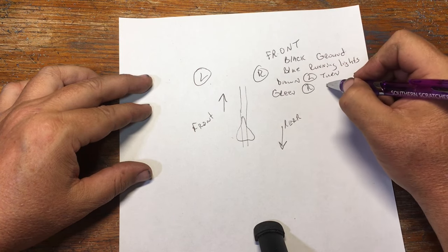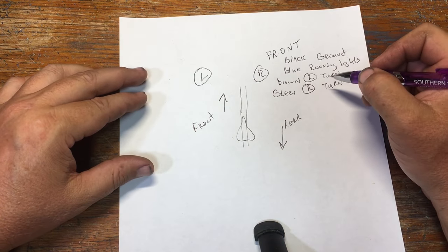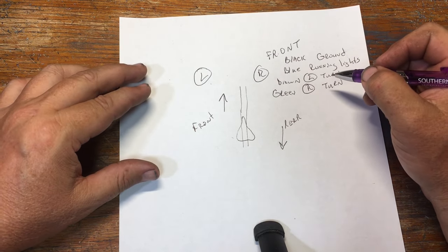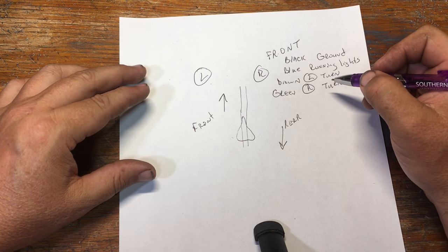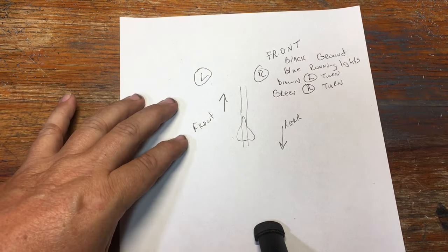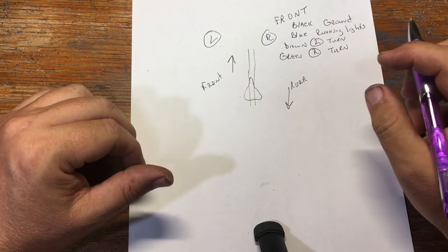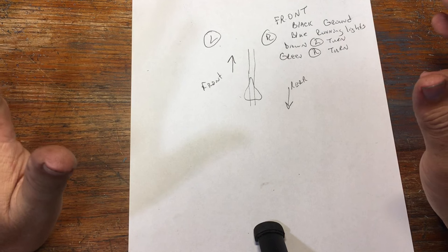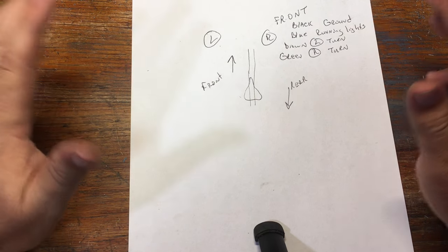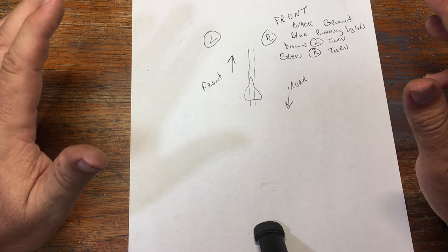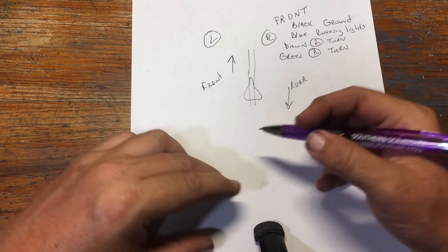Now there could be some variations on these colors if somebody's gotten into the bike and done some modifications. If you're curious about the colors, you can go on to Google and punch in your bike, like if it's a Honda 650, punch in Honda 650 turn signal wiring schematic or diagram or even color, and it'll show you.